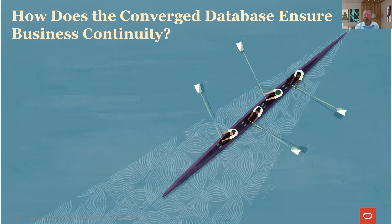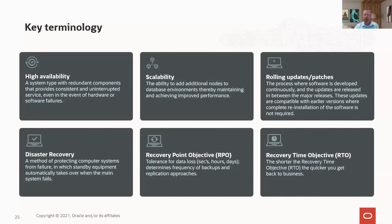Now we get into business continuity — high availability and disaster recovery specifically — and how it works. I'm going to start with terminology and talk about MAA, then jump into specific examples. And with me is Siraj Ramesh, one of our product managers who will be answering your questions in the Q&A. He's part of my team focused on MAA. If you're not already typing questions into the Q&A, go ahead and do it.